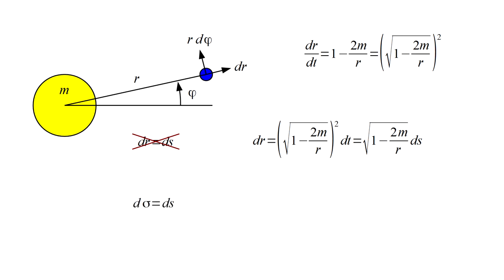We are forced to conclude that the local observer does not consider dr to be an increment of distance. Instead, we write an increment of distance as d sigma, and express the local observer's unity speed of light as d sigma equals ds.